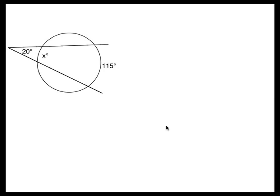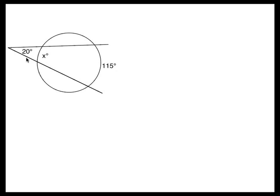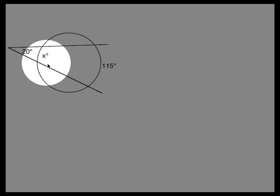Alright, we have two secants that form an angle of 20 degrees and intercept two arcs, one of X degrees and another one of 115.